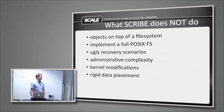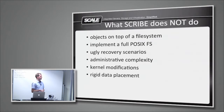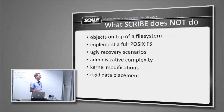I want to briefly mention what Scribe does not do, because these are some of the initial design choices we made after looking at other technologies. The first item is objects on top of a file system. There are a lot of storage technologies that do allocations on top of EXT4 or ButterFS. You can get into some interesting bottlenecks and performance situations with F-sync behavior in a file system, especially on freshly allocated files — those operations tend to spider out and pretty soon you're syncing the whole world when you don't want to be. We use block devices via the Linux native AIO interface and avoid the file system entirely.